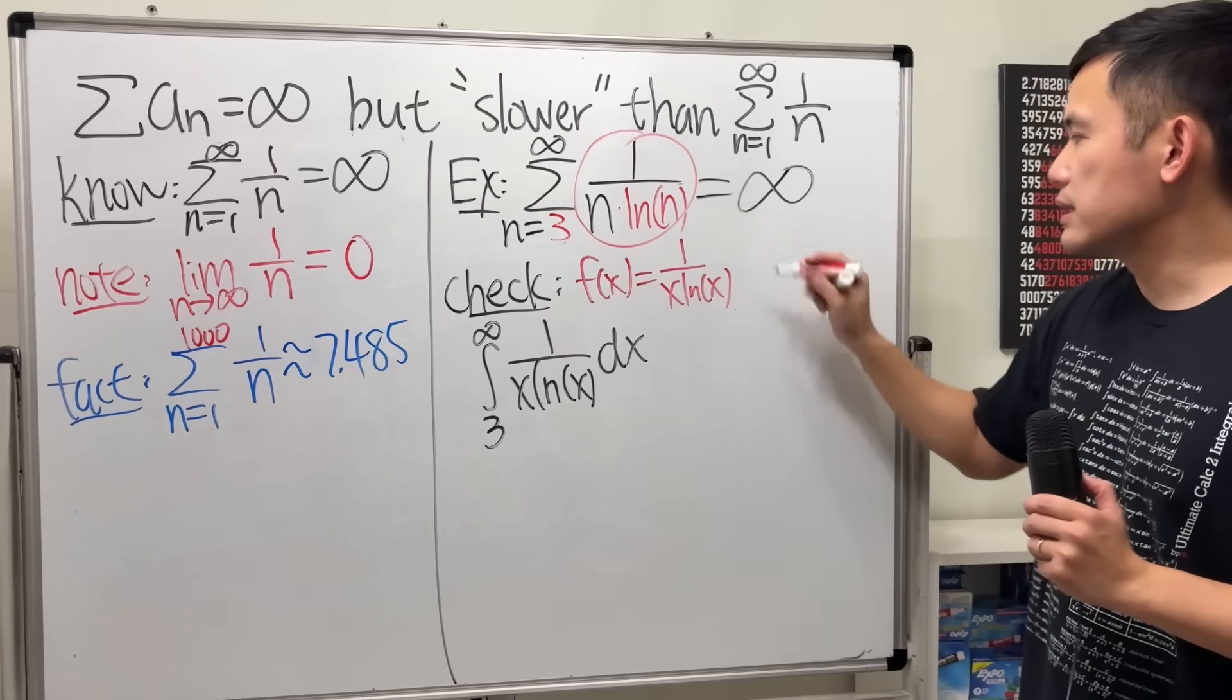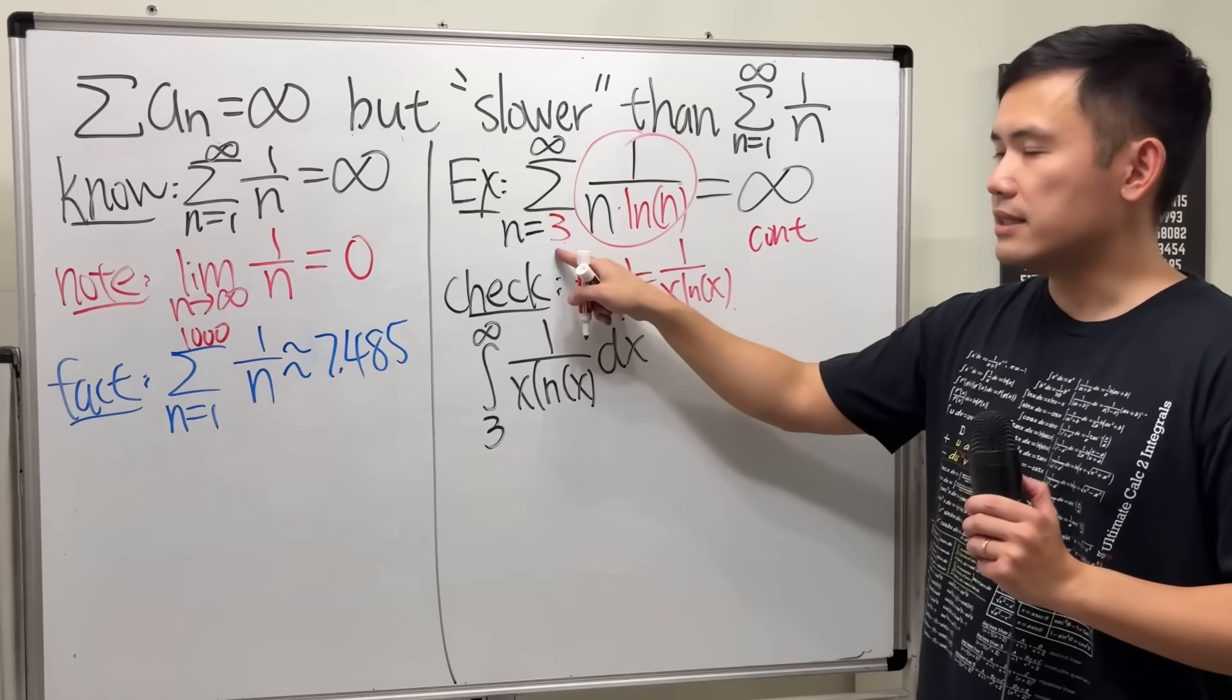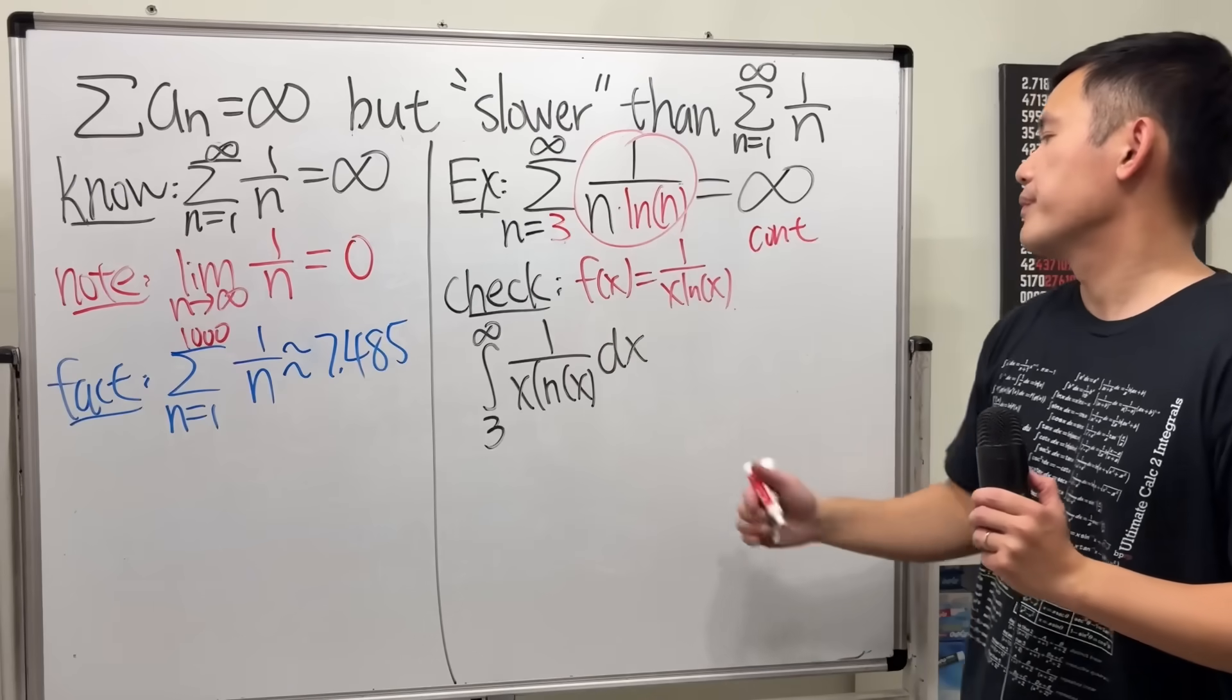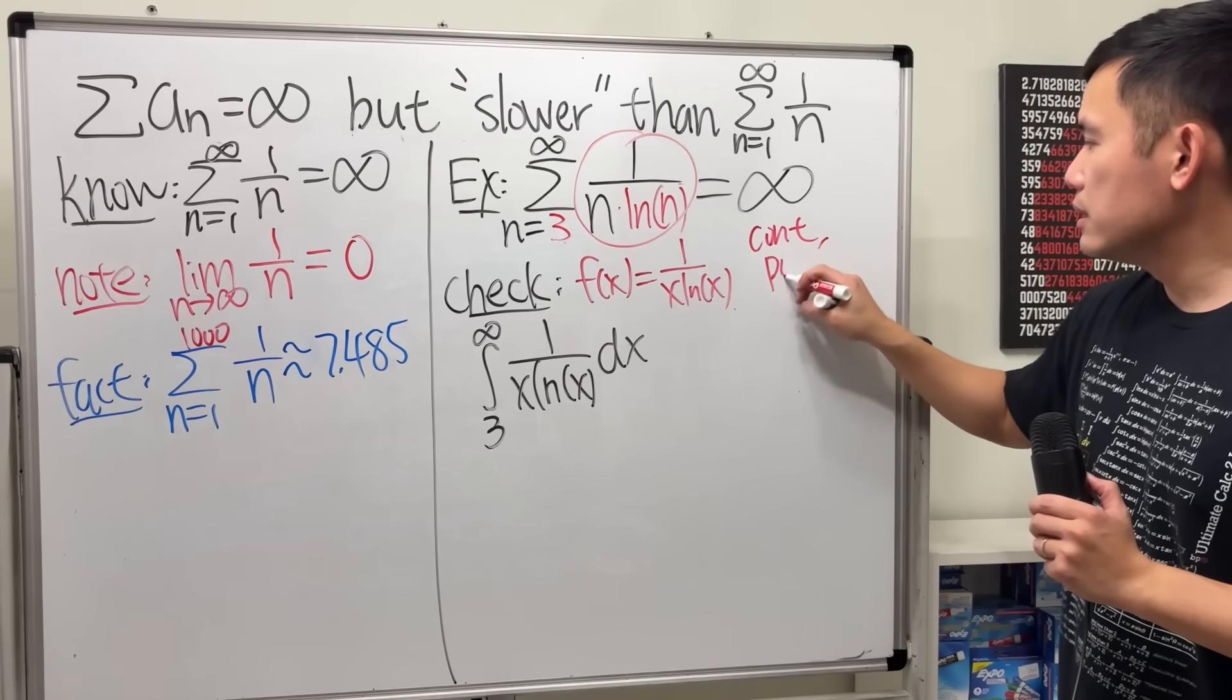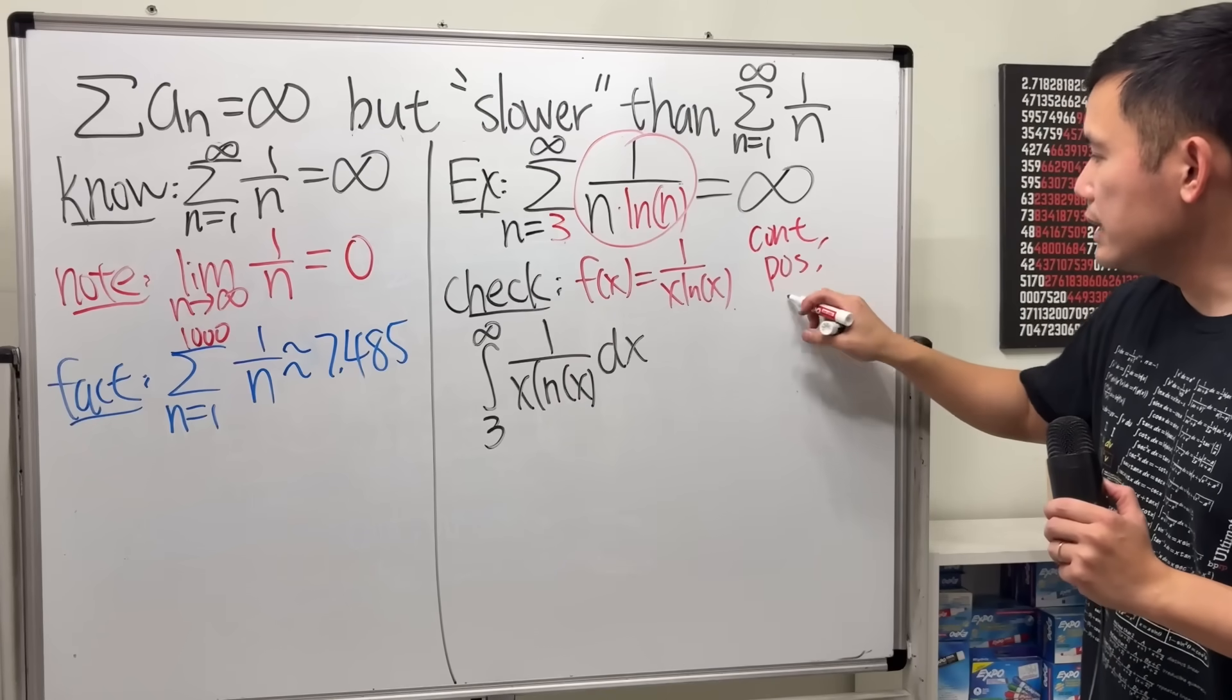Is this continuous? Yes. I know it's not continuous at 1 but it's continuous as x is bigger than 3. It's continuous, it's positive, meaning above the x-axis, and it's also decreasing.